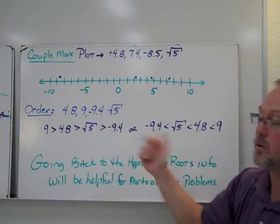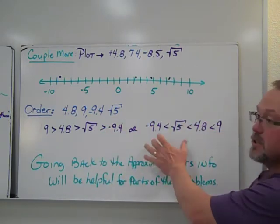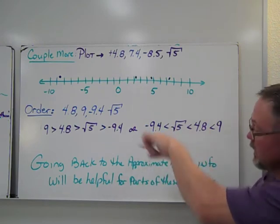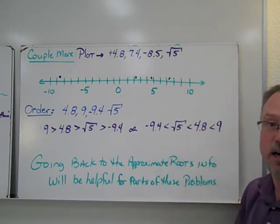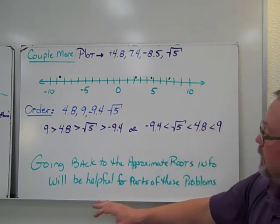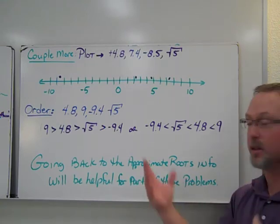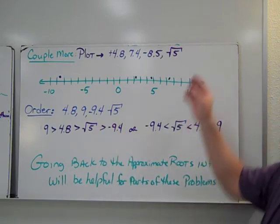So really, if you just line these up and then just put your symbol going in the right direction, you got it for that. Our second example would be our negative 9.4 less than square root of 5, which is less than 4.8, which is less than 9 for that section. So going back to the approximate roots info that we just did will help you in this part, especially with this part of the problem here.